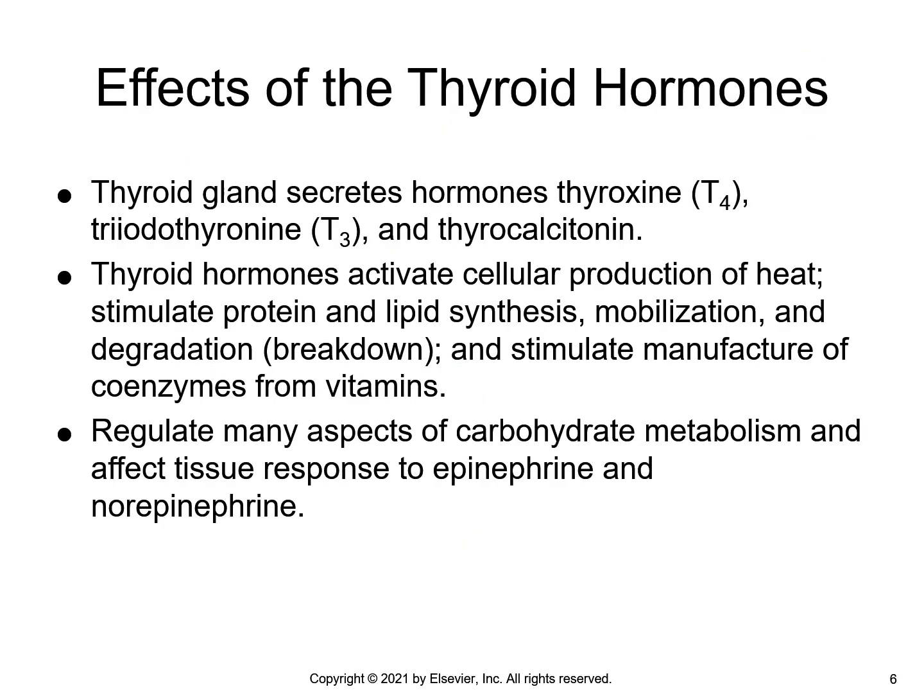T3 is the more potent form of thyroid hormone. T4 is converted to T3 by removing an iodine atom from the T4 molecule. Intake of protein and iodine is needed to synthesize both thyroid hormones.